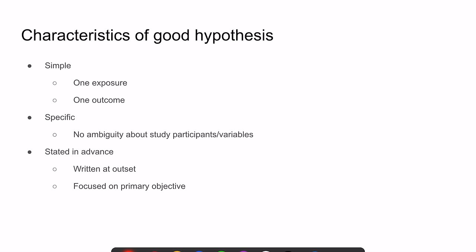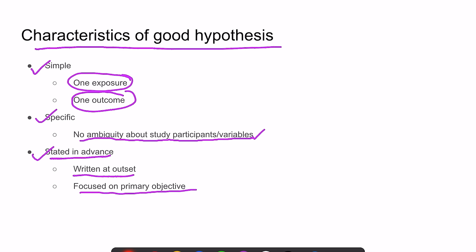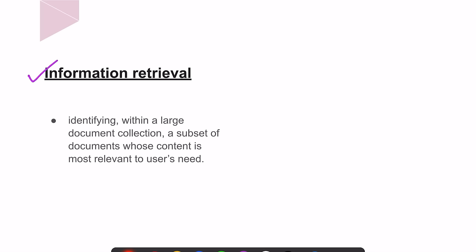The characteristics of a good hypothesis: it should be simple, specific, and stated in advance. Simple means it should have one exposure and one outcome at the same time. Specific means there should be no ambiguity with reference to study participants, variables, and operational definitions. It should be written at the outset and focused on the primary objective. Information retrieval is identifying, within a large document collection, a subset of documents whose content is most relevant to the user's need.